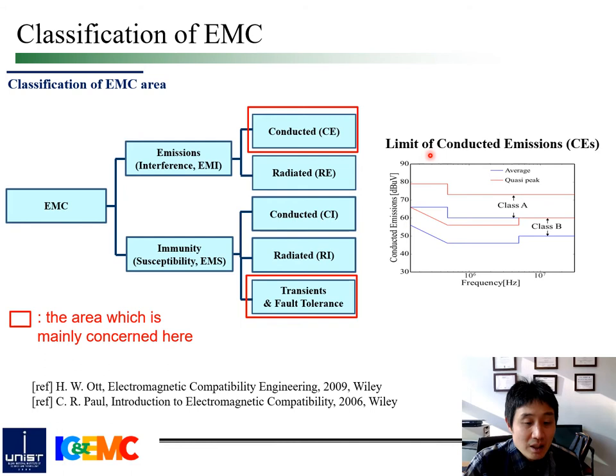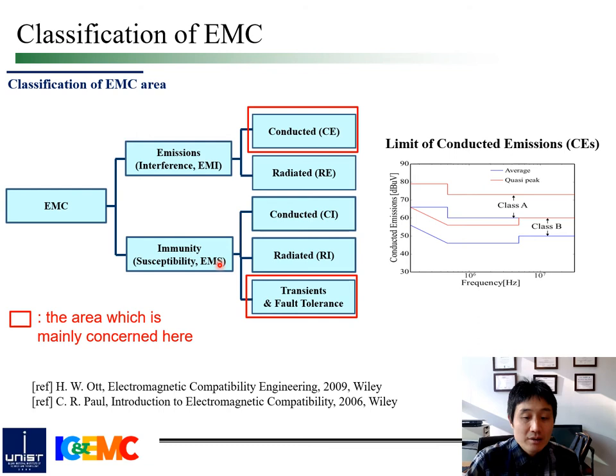The EMC problems can be classified as shown here. First, it is divided into two kinds: electromagnetic interference, which is called EMI, and electromagnetic susceptibility, which is called EMS. They are further classified by conduction and radiation. The topic of this tutorial on EMI filter is mainly about reduction of conducted emission. Also, in the design of EMI filters, high-voltage transients and fault tolerance should be considered for practical application.